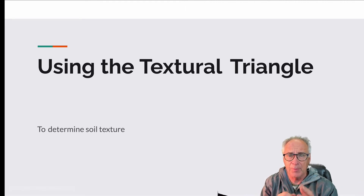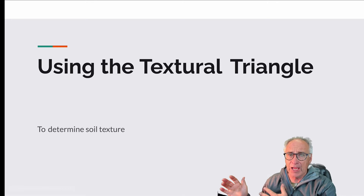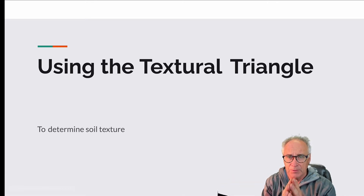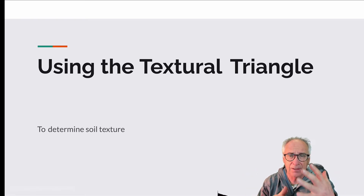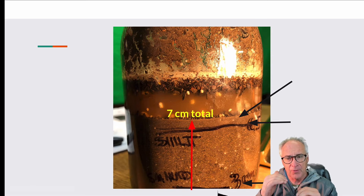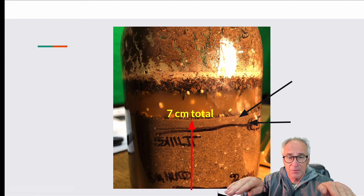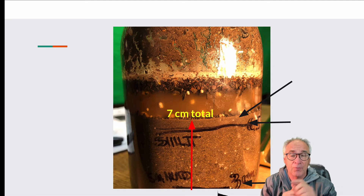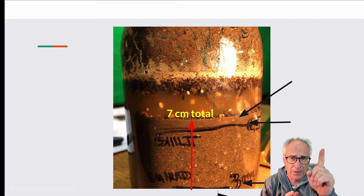But there's something about being able to determine it on our own. This isn't a super accurate way, but it gives you an idea of how you might use this in a situation where you can't afford to continually send stuff off to the lab. We have a total of 7 centimeters from the very bottom of the glass to the very top of the soil, and we're going to use that to calculate the actual percentages of sand, silt, and clay.